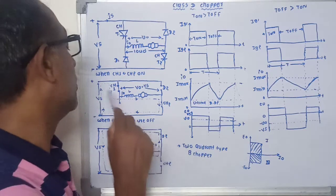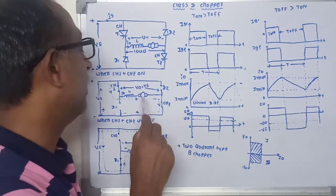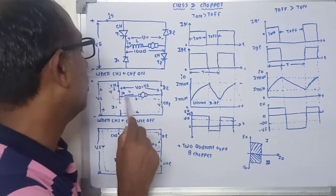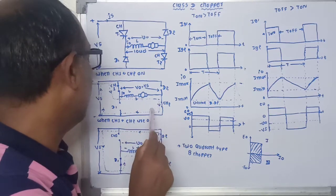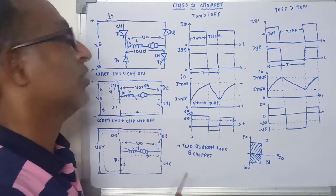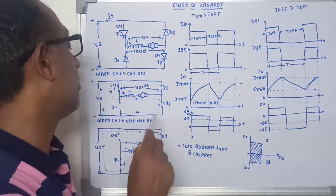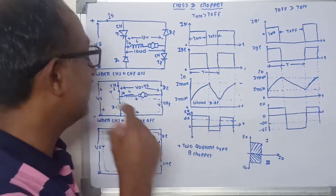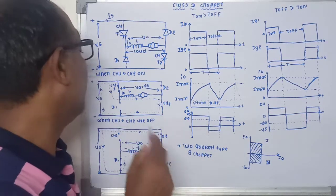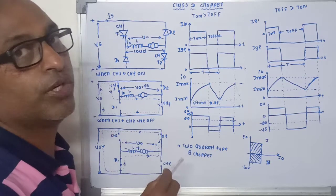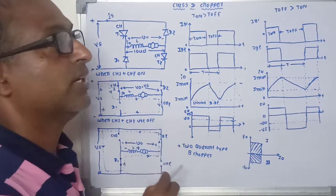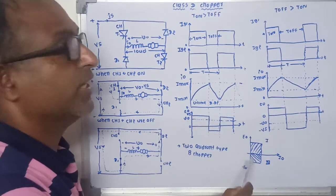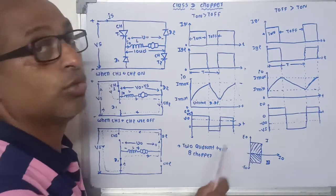Due to this voltage, current starts flowing from the source to the load, following the path from the positive terminal of VS through CH1, through the inductor, through the load, and back to the negative terminal of VS. The current flows from left to right in the load, which is taken as positive. So in this case, output voltage V0 is positive and load current I0 is also positive, meaning this chopper operates in the first quadrant.